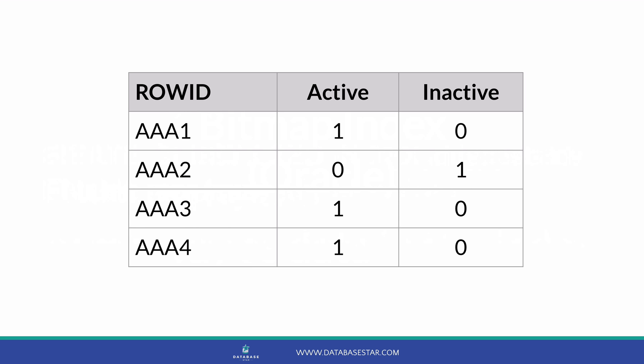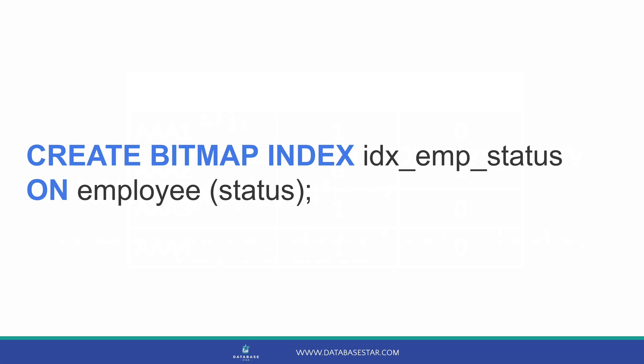Each row is a separate identifier for the row, and each column relates to a separate value of a specific column. The intersection of rows and columns is a single bit, which indicates that row has that value in the column. For example, if we have an employee table with a column called status that can be set to either active or inactive, a bitmap index would have a column for active and a column for inactive. It works well for columns that have a small number of unique values. The more possible values in a column, the more data stored for the index, and the less effective it would be. To create a bitmap index, we use the same CREATE INDEX statement but with the word bitmap in the middle.